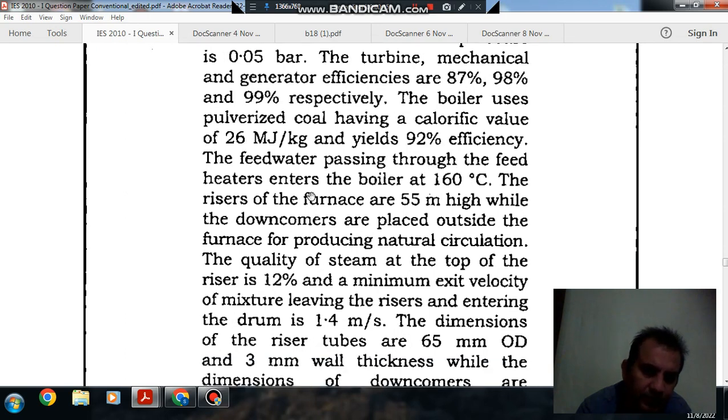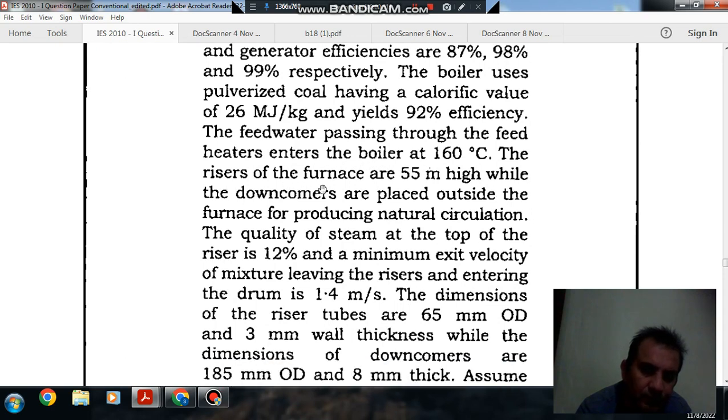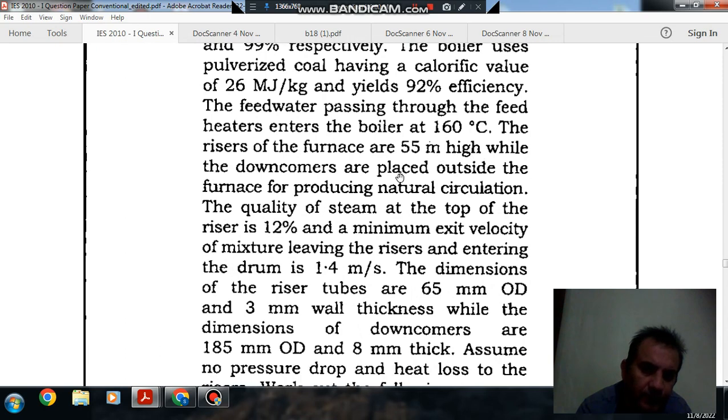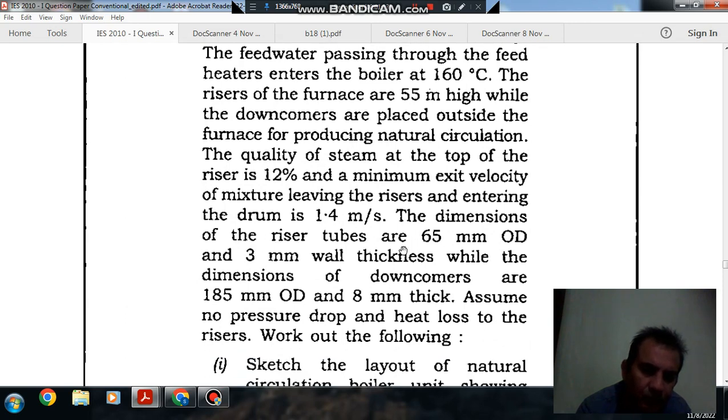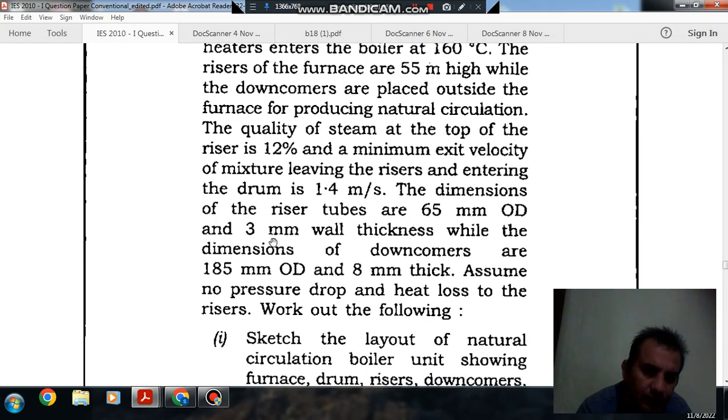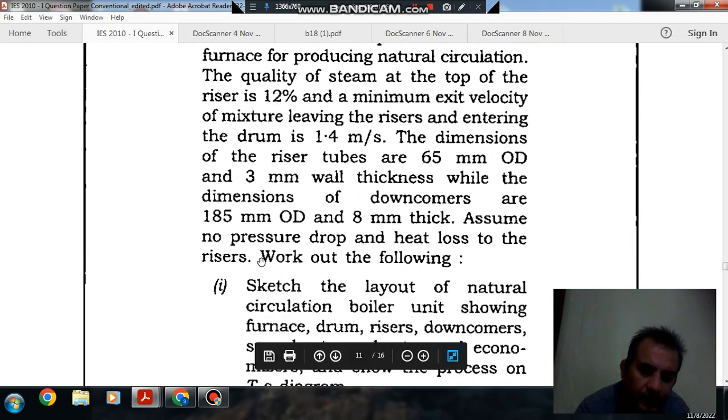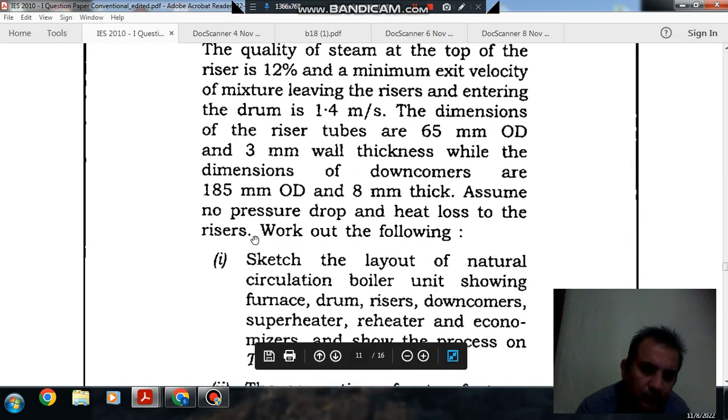The feed water passing through the feed heaters enters the boiler at 160 degree Celsius. The risers of the furnace are 55 meter high while the downcomers are placed outside the furnace for producing natural circulation. The quantity of steam at the top of the riser is 12% and a minimum exit velocity of mixture leaving the risers and entering the drum is 1.4 meter per second. The dimensions of the riser tubes are 65 mm OD and 3 mm wall thickness. While the dimensions of the downcomers are 185 mm OD and 8 mm thick. Assume no pressure drop and heat loss to the risers.